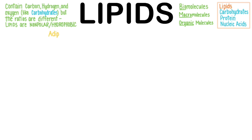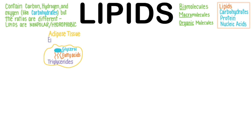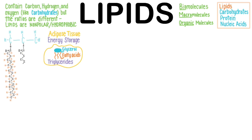Adipose tissue stores lipids in the form of triglycerides. These lipids have a glycerol head and three fatty acid tails, which provides vast amounts of efficient energy storage for our bodies. Here is the glycerol head of the triglyceride, and here are the three fatty acid tails.